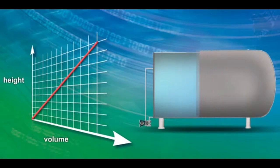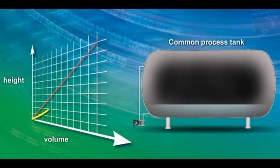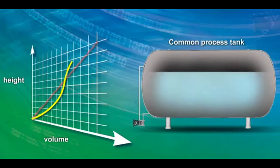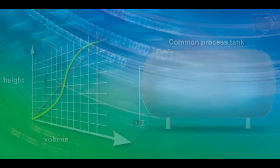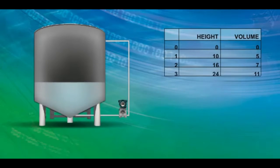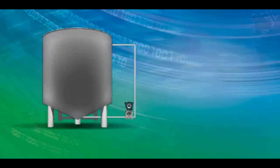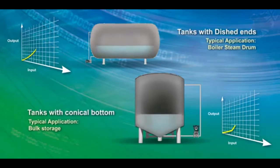However, most process tanks have irregular shapes. In those cases, height is no longer proportional to volume. The profile or relationship between level and volume needs to be considered to measure tank volume accurately. Different shaped tanks have different profiles.